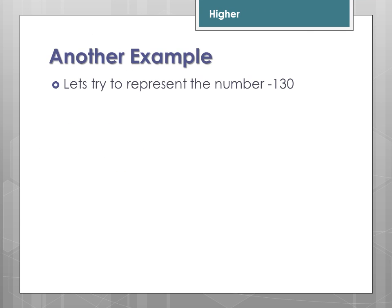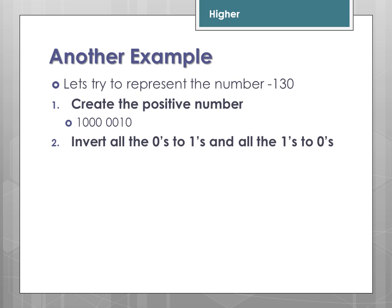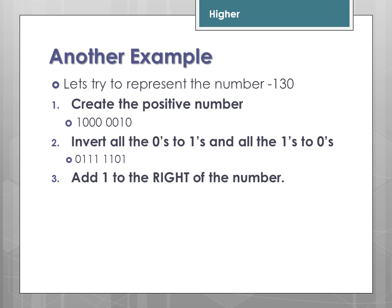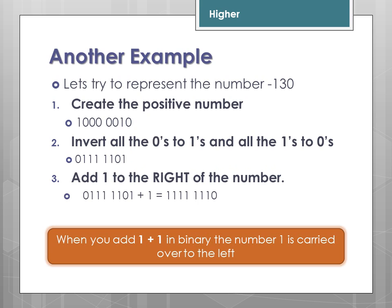Here is another example. Let's try to represent the number minus 130. First, you get the positive binary representation of 130. The next step is you invert all the 0s to 1s and the 1s to 0s, giving us 0, 1, 1, 1, 1, 1, 1, 1. Then you add a 1 to the right of the number. You will notice at this point there is already a 1 there, so when we add this 1, you will see that 1 plus 1 in binary equals 0 with carry — because 1 plus 1 is 0 and carry the 1 to the left. You would keep carrying it over to the left if needed.